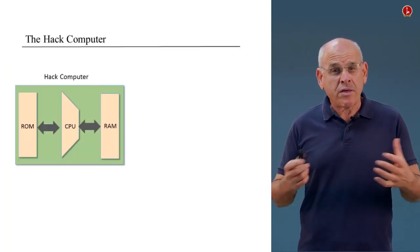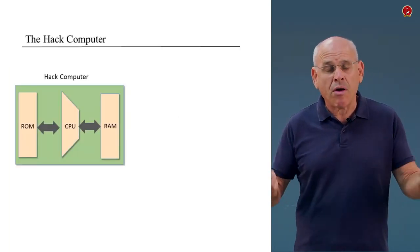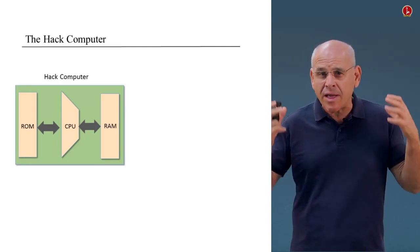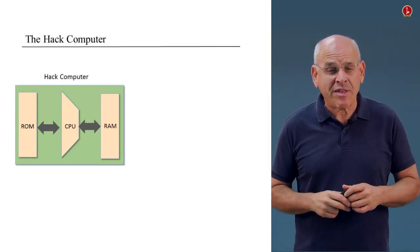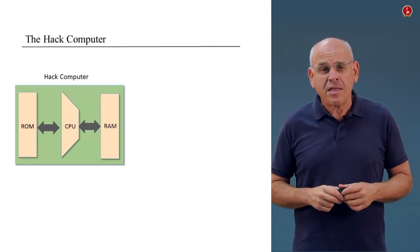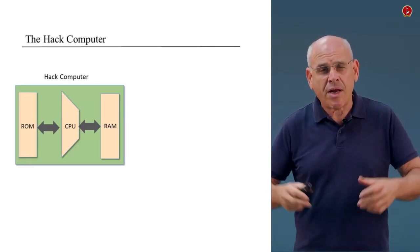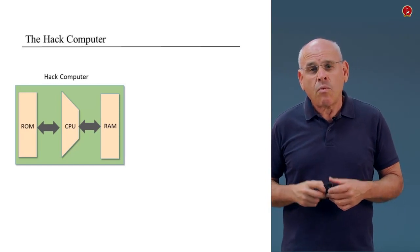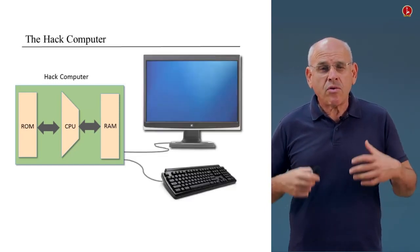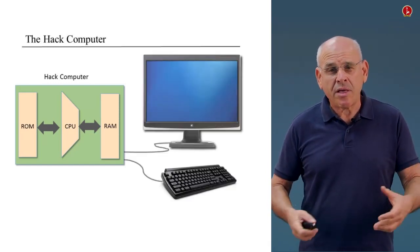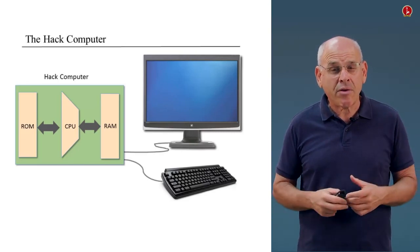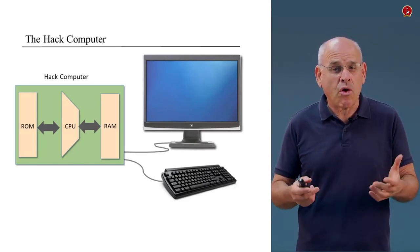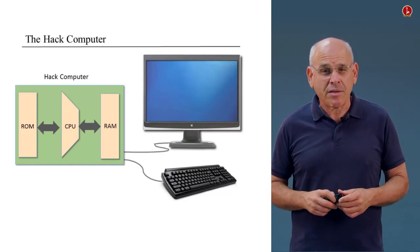Here's the computer in a very broad description — a diagram that captures only some of its very main elements. It's going to have a ROM, a CPU, a RAM, and many other chips. And once we build this computer, we're going to connect it to a standard keyboard and to a display unit. At this point, you can start executing programs and enjoy the computer that you actually built.